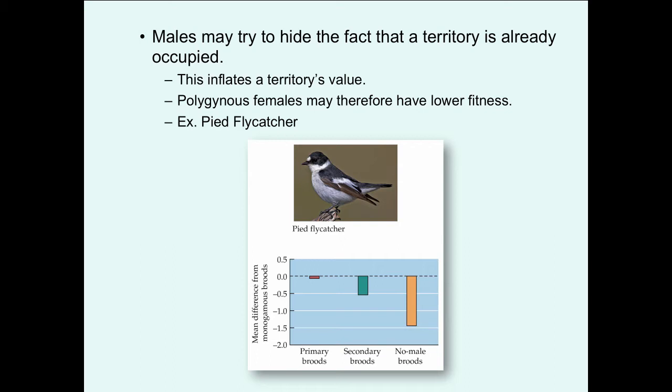While the first female defends the territory against female intruders to maintain a monogamous situation, males benefit from having multiple females and try to hide the fact that their territory is already occupied. This inflates the territory's value to prospective females, who lack accurate information. A female may think the male is unmated with a high-quality territory when in fact he is not, making it difficult for her to make an appropriate decision, and polygynous females can end up with lower fitness.